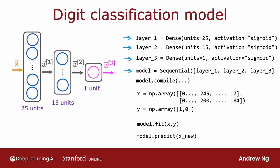And same as before, you can then store the data in a matrix and run the compile function and fit the model as follows. Again, more on this next week. And finally, to do inference or to make predictions, you can use model.predict on x_new.